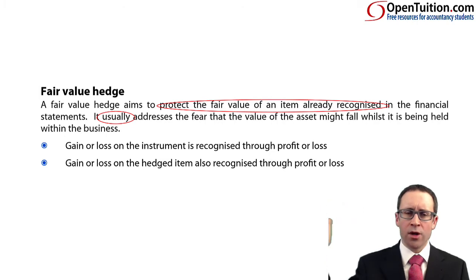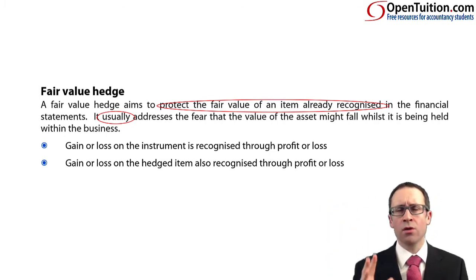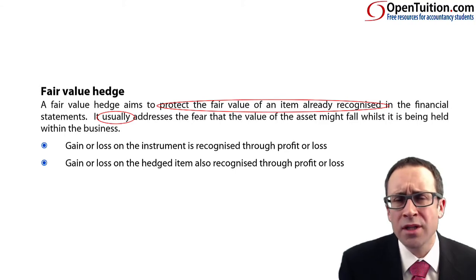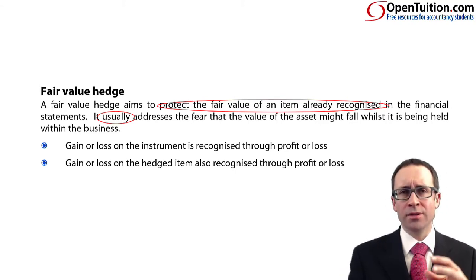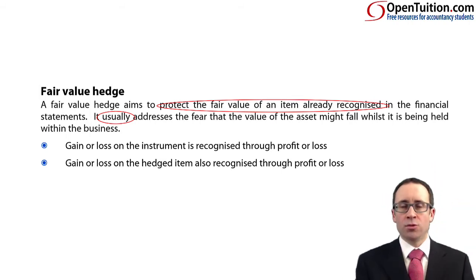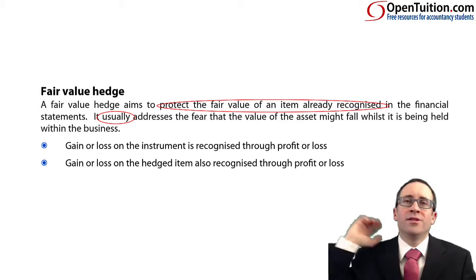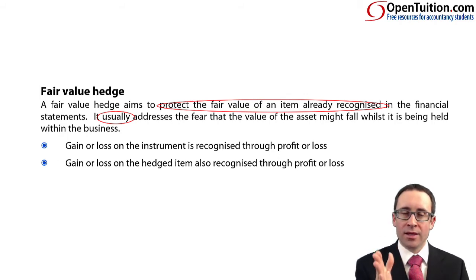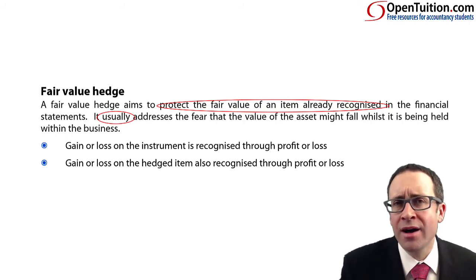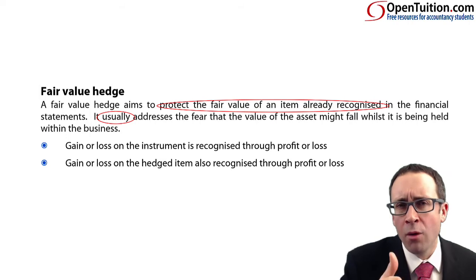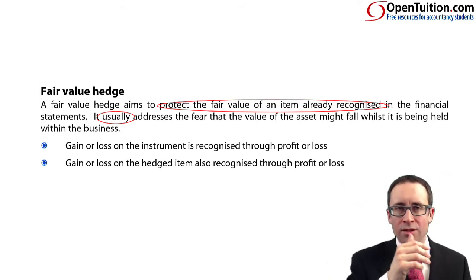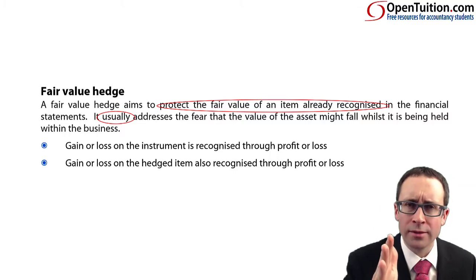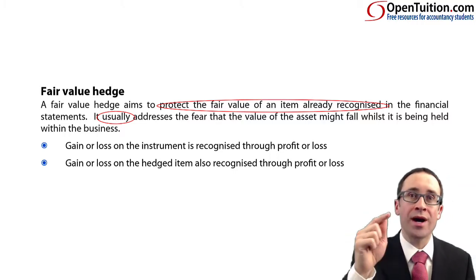The treatment is much more straightforward: the gains or losses on both the instrument and the item go through profit or loss. On the derivative — the hedging instrument — that's what normally happens anyway, it goes through profit or loss. The big difference is on the item. It doesn't matter how you treat it normally; the gains or losses go through profit or loss. So if you're hedging the fair value of inventory, forget IAS 2 lower of cost and NRV. Under hedging, the inventory goes up in value, you've got a gain, and that gain goes through profit or loss — which is not something you'd normally do. But under hedging, those are the rules and you have to stick to them.